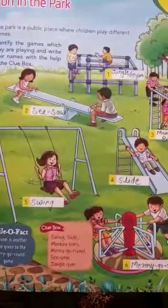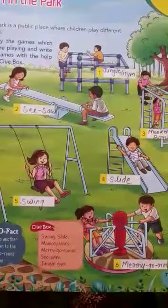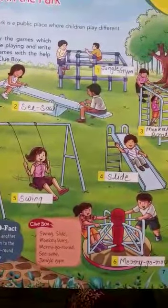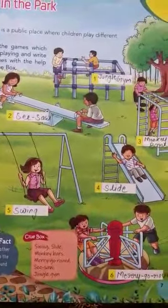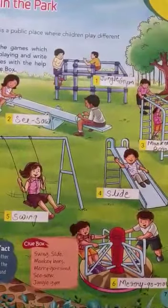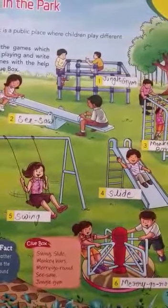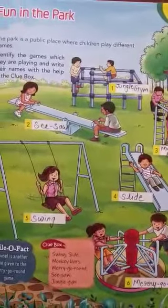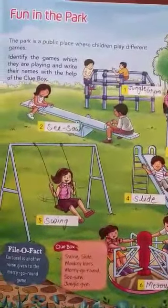Picture number 6, children are playing. Which game is this? This is Merry-Go-Round. So we write here: Merry-Go-Round. Exercise number 3 — Fun in the Park — is complete.